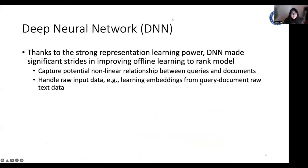On the other hand, in the recent decades, thanks to the strong representation learning power, Deep Neural Network made significant strides in improving offline learning to rank model. Compared to a linear model, Deep Neural Network is able to capture potential non-linear relationship between queries and documents. And it can handle the raw input data, which provides a system more flexibility and capacity in modeling complex relationships between a document and its relevance quality.